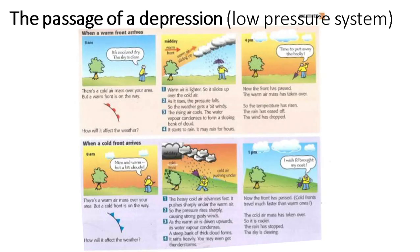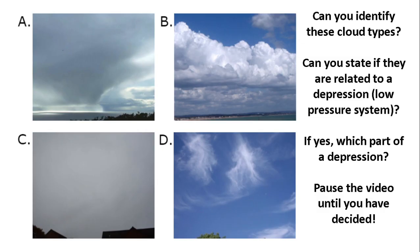That's summarised in a visual here - feel free to pause this video and read through the summary of the passage of a depression. Hopefully we can now make the connection between what we see in the sky and the clouds, and how that links to the theory of a passage of a depression. Can you state whereabouts in the depression you would see particular clouds? Pause the video if you'd like to.